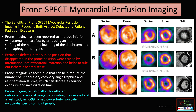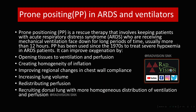Prone SPECT myocardial perfusion imaging: here a perfusion defect is seen in the anterior wall in supine but is absent in prone, and an inferior wall defect in supine is also not seen in prone. Perfusion defects that disappear in prone are caused by attenuation artifacts and not true myocardial infarction — helping differentiate artifacts from ischemic heart disease. Prone imaging can also allow efficient radiopharmaceutical usage by avoiding the need for rest studies in Tc-99m MIBI myocardial perfusion studies, reduce unnecessary coronary angiographies, decrease radiation dose, and reduce investigation time.